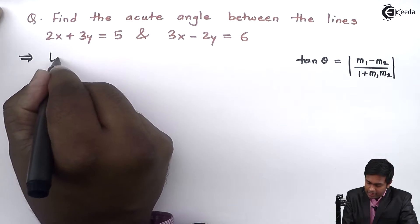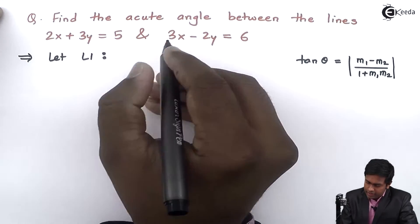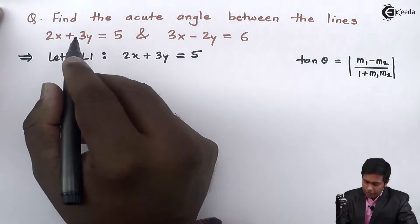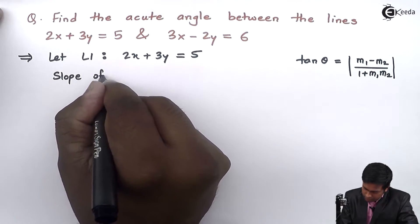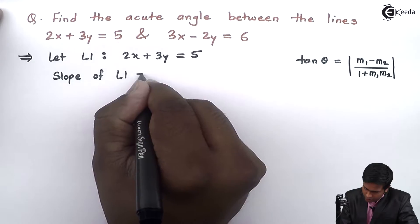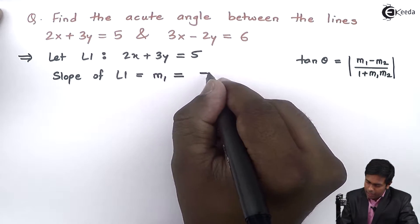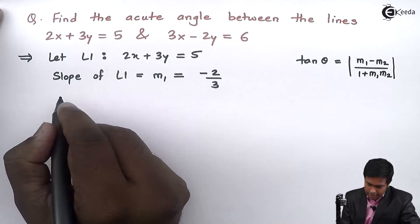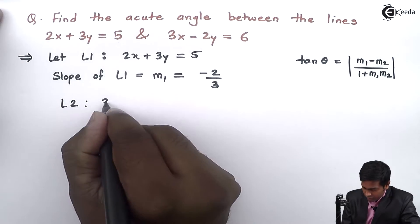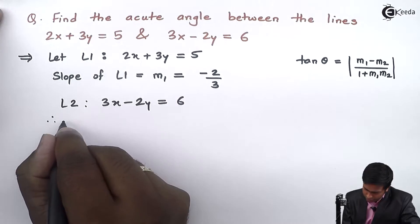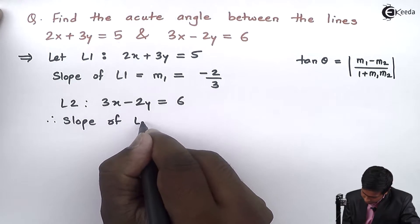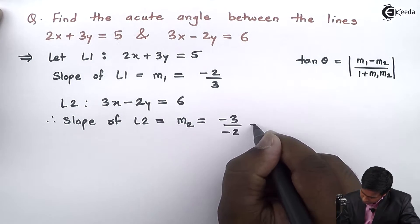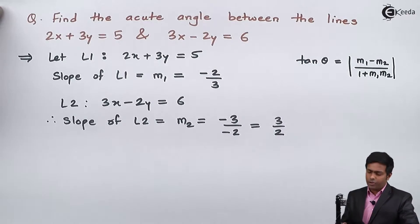So let's start. Let l1, that is line number 1, be 2x plus 3y equal to 5. The slope of l1 is m1, which is equal to minus 2 upon 3, using the formula minus a by b. Similarly, let line number 2 be 3x minus 2y equal to 6. Therefore the slope of l2 is m2, which is equal to minus 3 upon minus 2, which equals 3 by 2. So we got the value of m1 and m2.